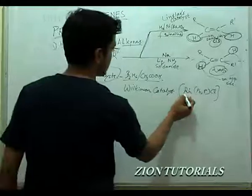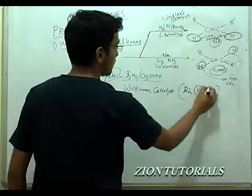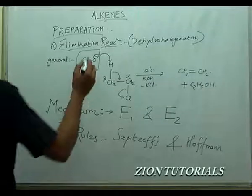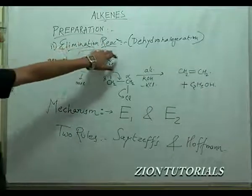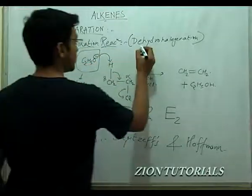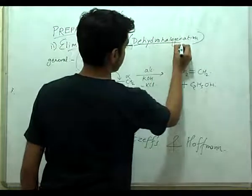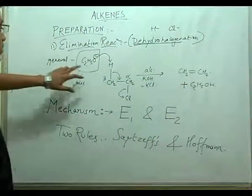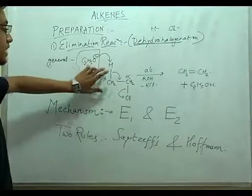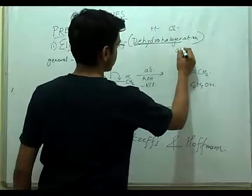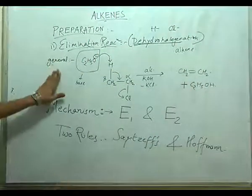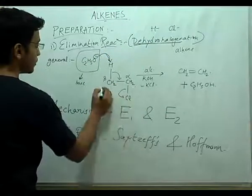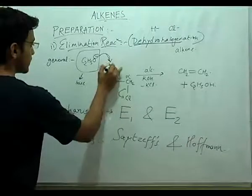Wilkinson's catalyst is a rhodium organometallic compound containing triphenylphosphine. Now the second method of preparation: the elimination reaction, also called dehydrohalogenation. Dehydrohalogenation means one hydrogen atom and one halogen atom are removed from the alkyl halide molecule to form an alkene. In this reaction, a base is used which extracts a proton from the alkyl halide at the beta position.